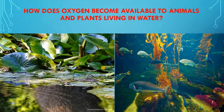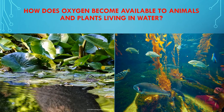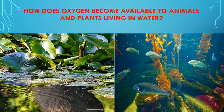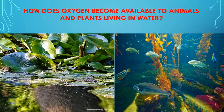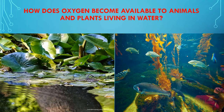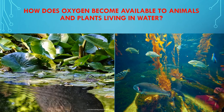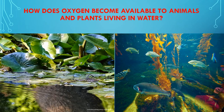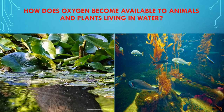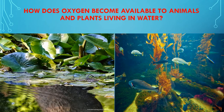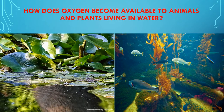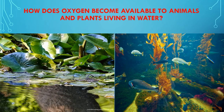How does oxygen become available to the animals and plants living in water? The animals which live in water are called aquatic animals. The plants which grow in water are called aquatic plants. These aquatic animals and plants live in the water of ponds, lakes, rivers and seas. The water of ponds, lakes, rivers and seas has some dissolved air in it. The animals and plants which live in water use the air dissolved in water for breathing.